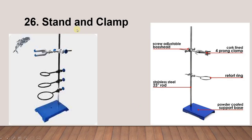Next is the stand and clamp. This is the stand and this is the base. We have different shapes of clamp. Here you can see three different sizes of retort ring. We also have the four-prong clamp type.